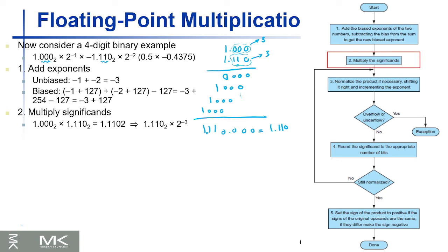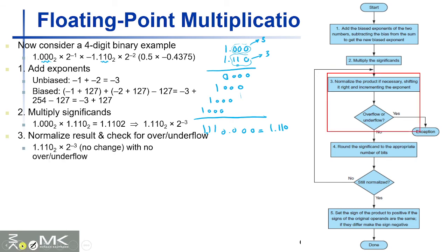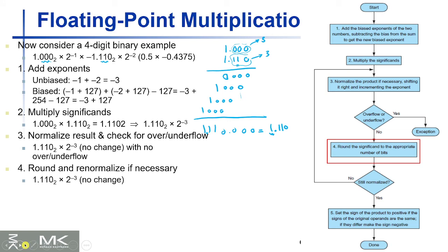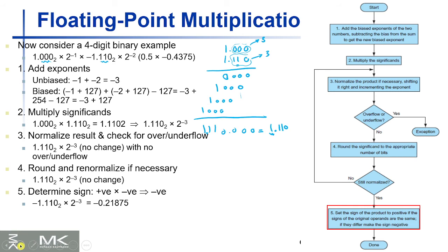The next step is normalization. Normalization means the significand must have exactly one bit equal to one before the binary point — which is already the case here, so there's no change needed. There is also no overflow or underflow. Then we do rounding — in this case there's no rounding needed. Finally, we determine the sign: check the signs of both significands. If they differ, the output has a minus sign.